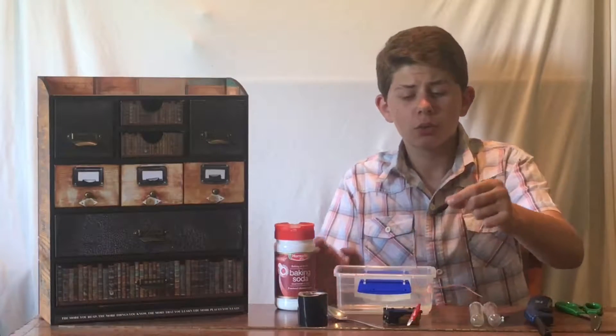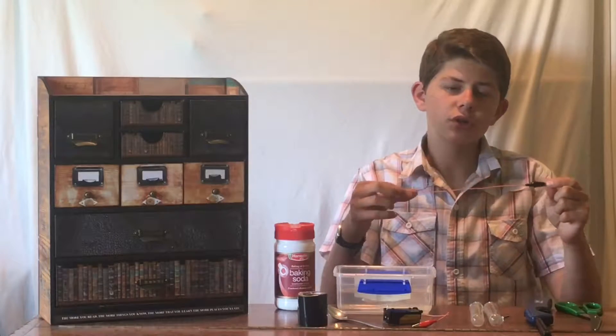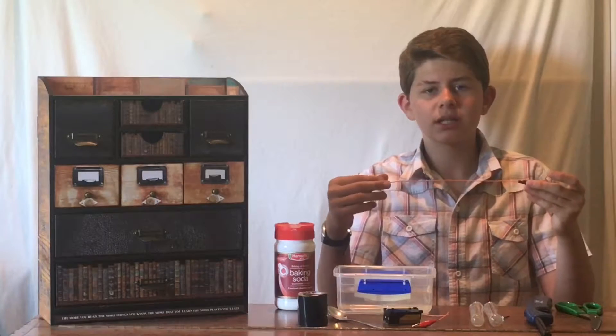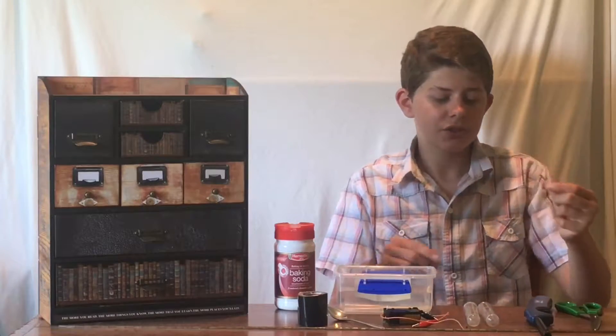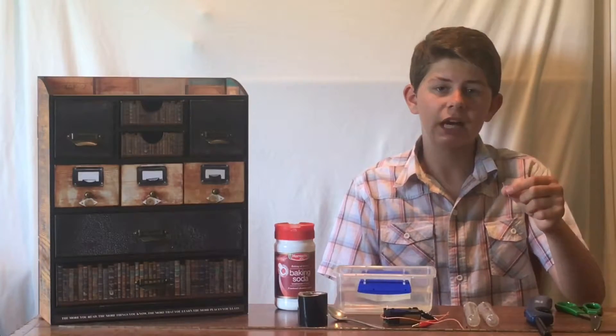To carry the electricity through the water, we're going to use two wires that are about 15 centimeters long with an alligator clip on the end. Connected to these wires is going to be two nails, which are going to be our electrodes.